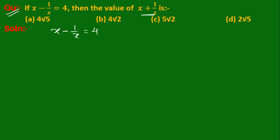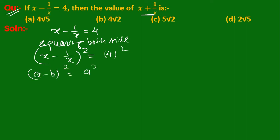Squaring both sides, we get (x minus 1 upon x) whole square is equal to 4 square. And we know that the formula of (a minus b) whole square is equal to a square plus b square minus 2ab.